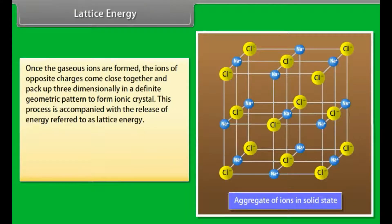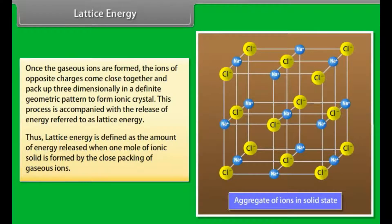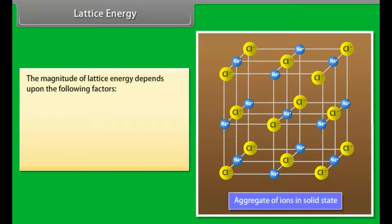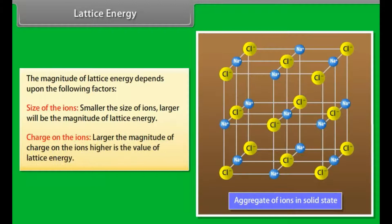Lattice energy. Once the gaseous ions are formed, ions of opposite charges come close together and pack up three-dimensionally in a definite geometric pattern to form ionic crystal. This process is accompanied with the release of energy referred to as lattice energy, defined as the amount of energy released when one mole of ionic solid is formed by the close packing of gaseous ions. The magnitude of lattice energy depends upon: size of the ions — smaller the size, lesser the internuclear distance and greater the interionic attraction, hence larger the lattice energy; and charge on the ions — larger the charge, greater the attractive force and higher the lattice energy.